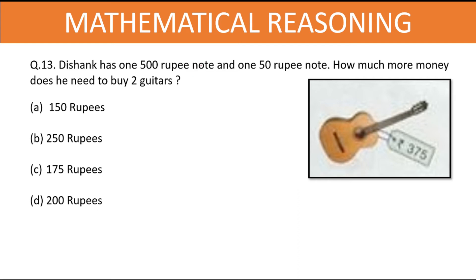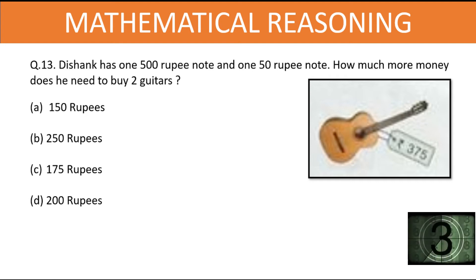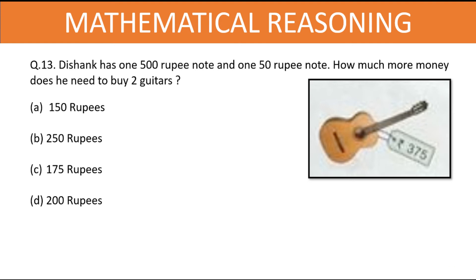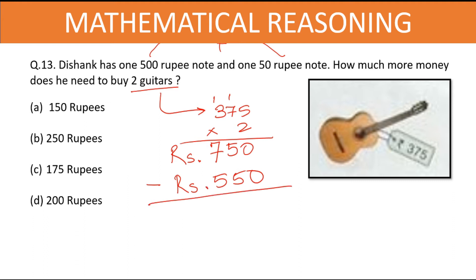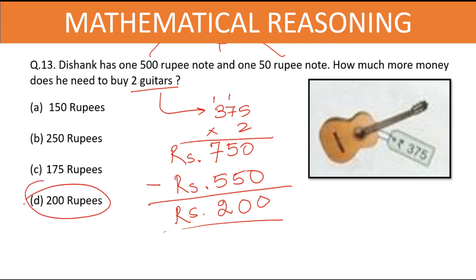Dishank has one 500 rupee note and one 50 rupee note. How much more money does he need to buy two guitars, given the price of one guitar is 375 rupees? Cost of two guitars: 2 times 375 equals 750 rupees. Dishank has 500 plus 50 which is 550 rupees. Subtracting: 750 minus 550 equals 200 rupees. So he needs 200 rupees more. The answer is option D.